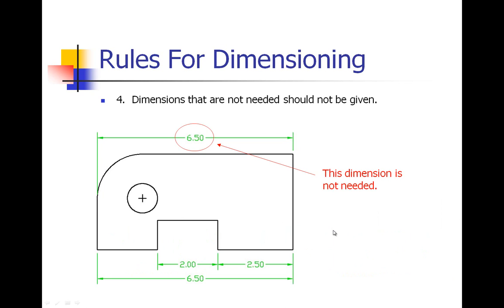Number four: dimensions that are not needed should not be given. And again this is for aesthetics and readability. We don't want a whole bunch of dimensions around here that we don't even need because it crowds the drawing and it makes it look not very good. So with this particular one, 6.50, I already have that measurement down here at the bottom, so I don't need to put that measurement again because I know that my measurement at the top should be the exact same as the measurement at the bottom.